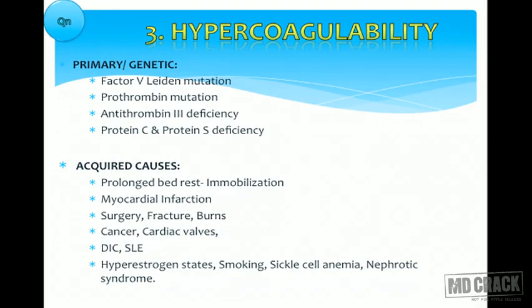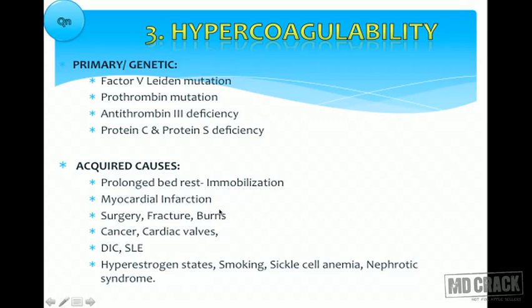Various causes for hypercoagulability of blood: most commonly it is primary or genetic, where inherited mutations occur, like Factor V Leiden mutations, prothrombin mutations, antithrombin 3 deficiencies, and deficiencies of protein C and protein S. Acquired causes are actually more common than primary causes. For example, a patient on prolonged bed rest after road traffic accidents — that immobilization itself predisposes to hypercoagulability. A patient who has undergone myocardial infarction is also prone to hypercoagulability.